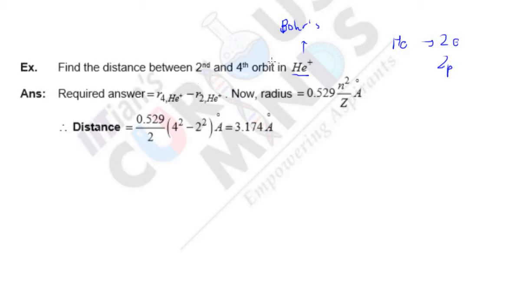So yes, now you know the radius of Bohr's electron species model. It is 0.529 into n squared upon z, where n is the orbit number and z is the atomic number. The atomic number of helium is 2. So z for helium is 2.